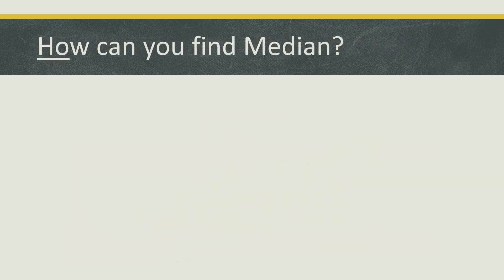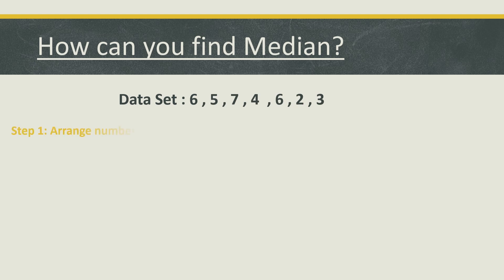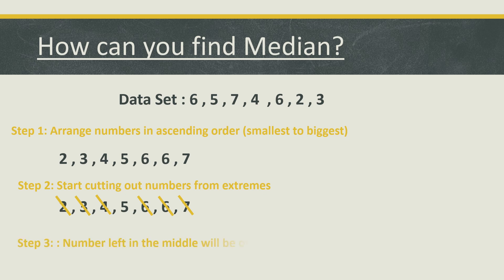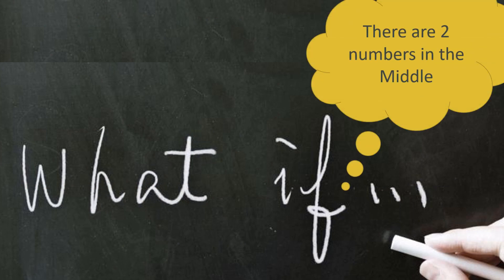How can you find median? Let's suppose we have a data set. Step number one: arrange the numbers in ascending order, smallest to biggest. Then start cutting out numbers from the extremes — cut out the most extreme numbers first, then the inner ones. You will see that only one number is left; the number left in the middle will be our median. In this data set, our median is 5.